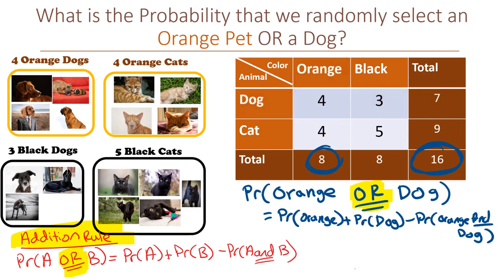So we have 8 orange pets out of 16 plus 7 dogs out of 16 pets minus 4 orange dogs out of 16 pets. Which is 11 out of 16, which is the same answer we found using our intuition. Thank goodness the addition rule works.